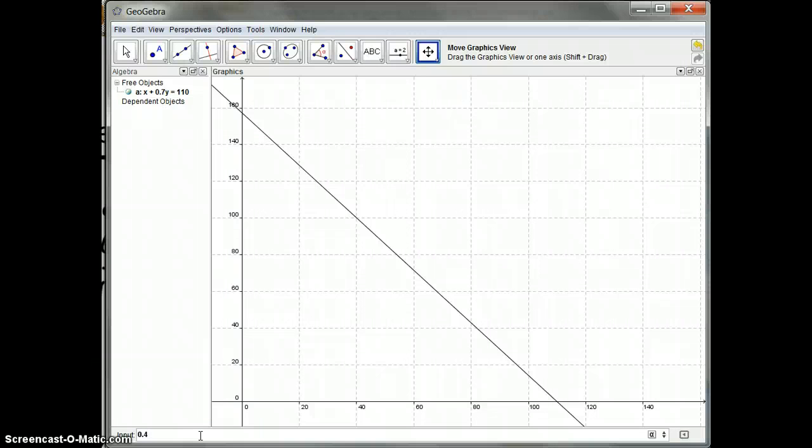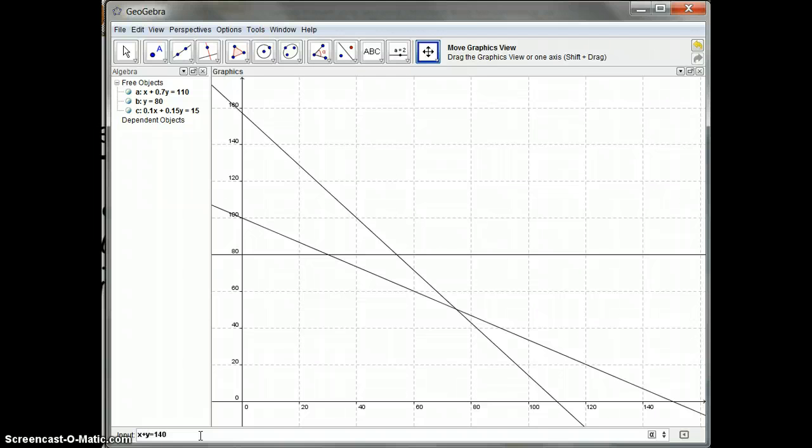0.4y equals 32. Just put a line there. 0.1x plus 0.15y is equal to 15. And finally x plus y is equal to 140. That should connect the points of 140 and 140. Alright.